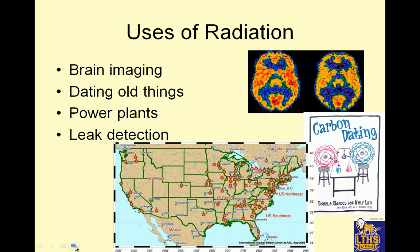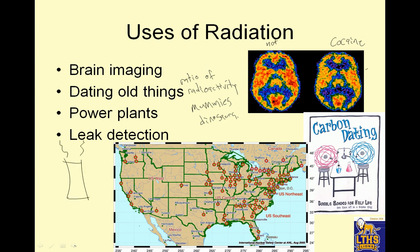Uses of radiation: brain imaging — we can see the radioactive parts, and you can see that radioactive blue goes to parts of your brain. This image was for someone who used cocaine versus someone not using cocaine, so you can see the parts of your brain that are affected. Dating old things: you can tell by the ratio of radioactivity how old something is — we can date mummies and dinosaurs. Power plants — not like the Simpsons, you know. Here's a map of all the power plants in the U.S.; notice how they tend to be around areas of high population. And leak detection.